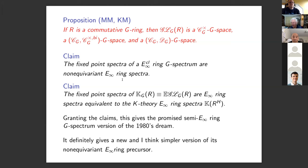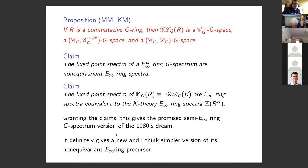Modulo the fact that we only have classical E-infinity ring spectra currently, the claim is that the fixed-point spectra of a naively classical E-infinity ring G-spectrum are non-equivariantly E-infinity ring spectra — I think this is true. If so, it highlights defects of work with Bert on modeling G-spectra as PG-spectra. Granting these claims, this gives us a promised semi-E-infinity ring G-spectrum version of the 1980s program, and definitely gives a new and much simpler version of the non-equivariant E-infinity ring precursor stated at the very beginning.